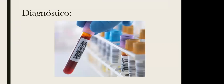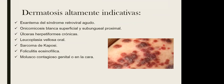En el diagnóstico es importante la revisión de la piel. Hay lesiones altamente indicativas de VIH: el exantema del síndrome retroviral agudo, la onicomicosis blanca superficial y subungueal proximal, las úlceras herpetiformes crónicas, la leucoplasia vellosa oral relacionada con herpes tipo 4, el sarcoma de Kaposi relacionado con herpes tipo 8, la foliculitis eosinofílica, y el molusco contagioso genital o en cara. Estas lesiones son altamente indicativas de VIH.